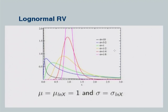Here is how the log-normal PDF looks for different values of sigma — the sigma of the corresponding normal random variable ln(X). For a very low standard deviation, like sigma = 1/4 or 1/8 (the red and pink curves), the log-normal PDF closely resembles the normal distribution PDF. For higher values of sigma (blue or green), it looks very different.